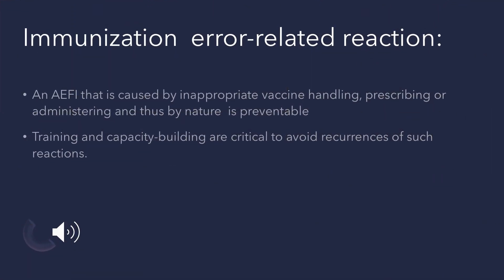Immunization error-related reactions: in the vaccination process, if the vaccine is not handled properly and errors happen in the prescription or administration process — wrong dosage, wrong route of administration, etc. — they are termed as immunization errors. All these immunization errors are preventable if the persons involved in the process are properly trained and care is taken.